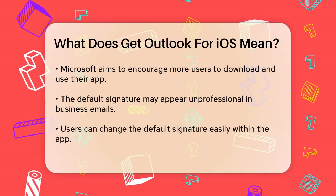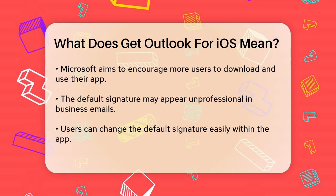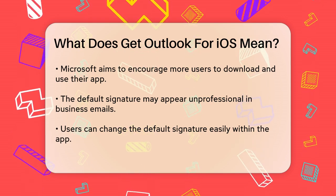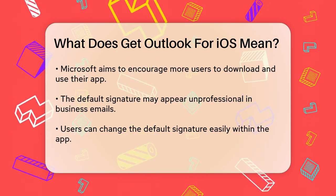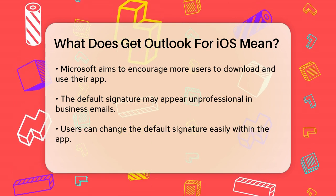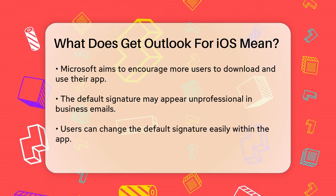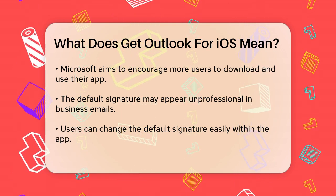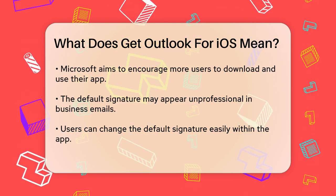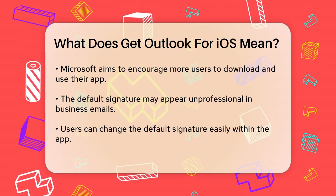The main reason for this signature is to promote the Outlook app. Microsoft wants to encourage others to download and use Outlook on their iOS devices, hence the 'Get Outlook for iOS' message. It's a way for Microsoft to spread the word about their app and its features.